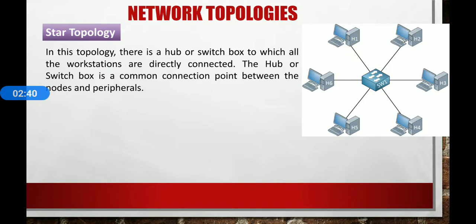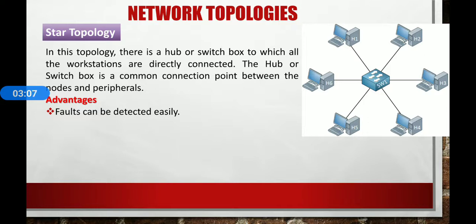This is a figure of the star network. The advantage is that computers can be connected easily — just put one end of the cable in the computer and the other end in the switch box. Data transfer between nodes is fast because it is directly connected with the switch, and faults can be detected easily, since each computer is individually connected to the switch.